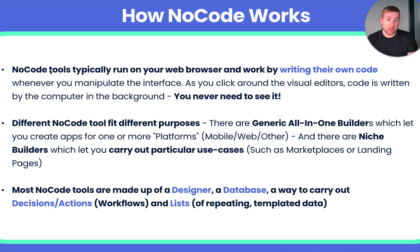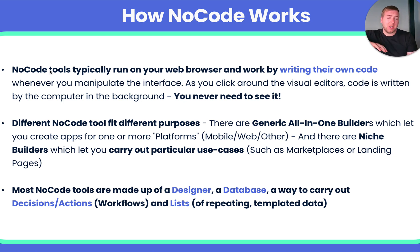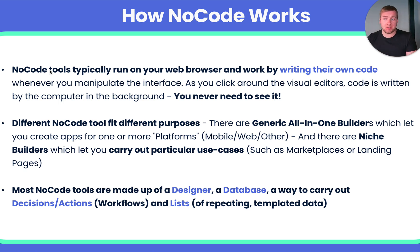Similarly, NoCode tools will also have a database. Usually you'll have the ability to say which kinds of data you want to save — things like users, drivers, riders, orders, or items. You define the data types you want to save, like email and password, and then input the actual data, such as johnsmith@gmail.com or rachel.forrester@hotmail.com, so on and so forth.